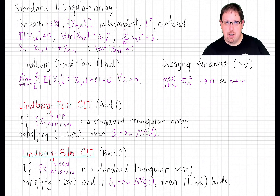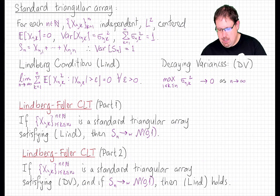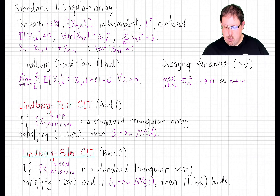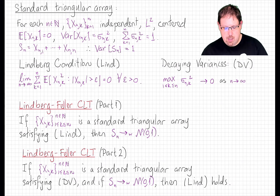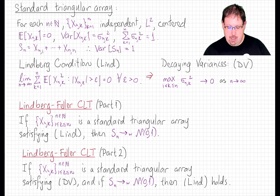There are two conditions that we considered. A natural one that came out of classical central limit theorem calculations is that the maximum of the variance of any element along each row should tend to zero. And then a slightly stronger condition, the Lindbergh condition, was this concentration condition, which as we saw last time implies the decaying variance condition.